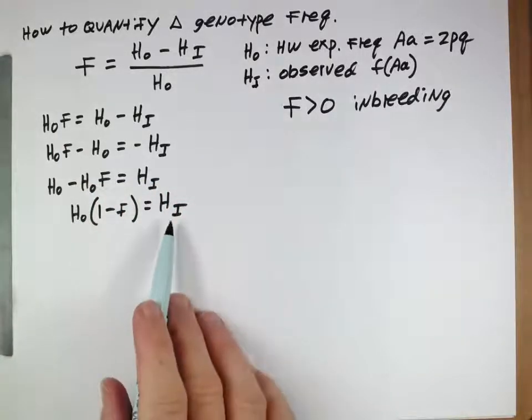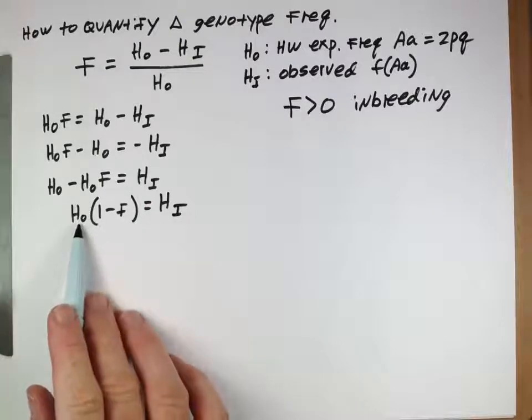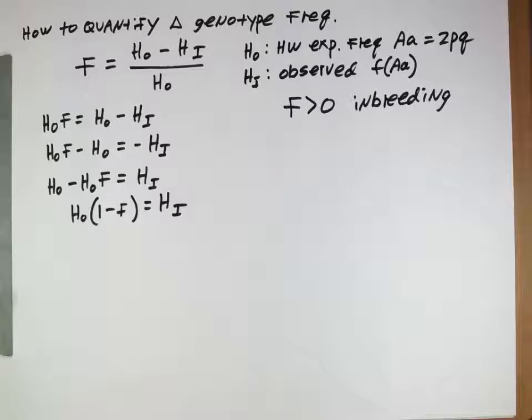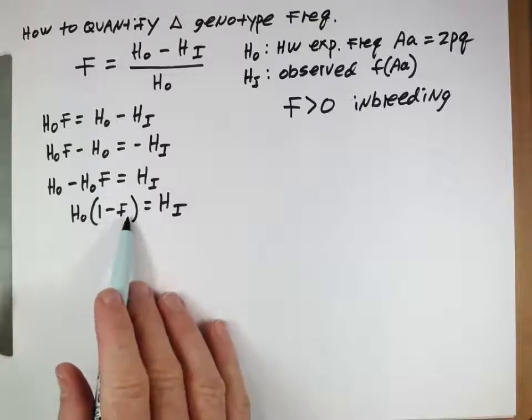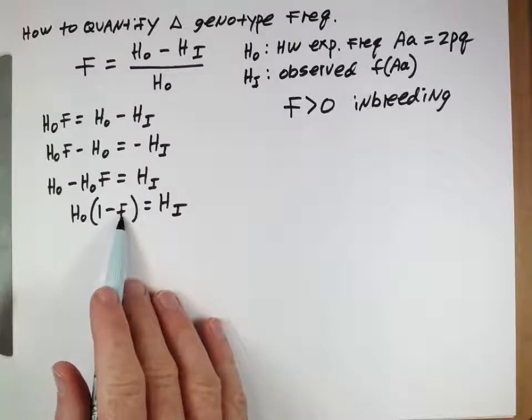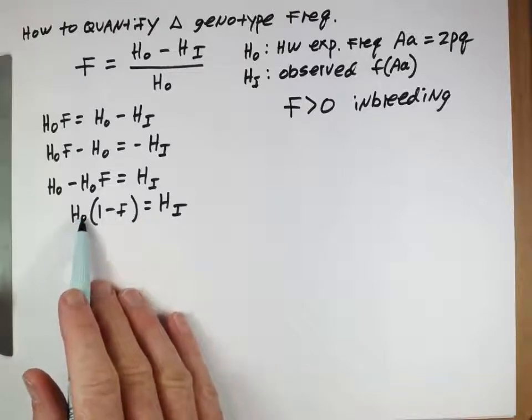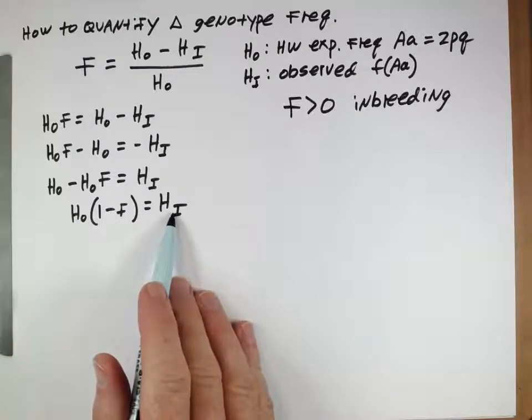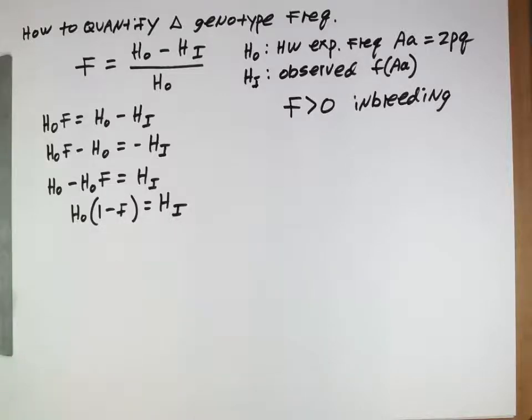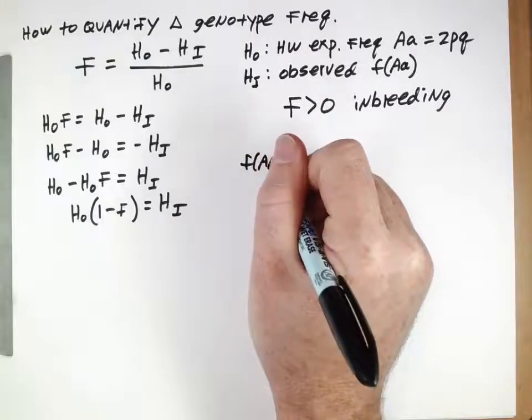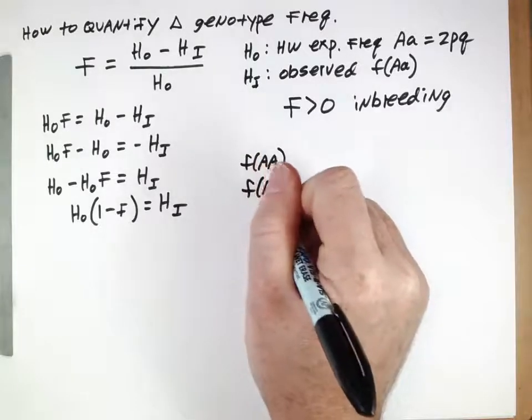Remember, HI is our observed frequency. HO was our 2pq, our expected under Hardy-Weinberg. And then 1 minus F is showing the degree to which F is reducing the observed frequency relative to what we expect.